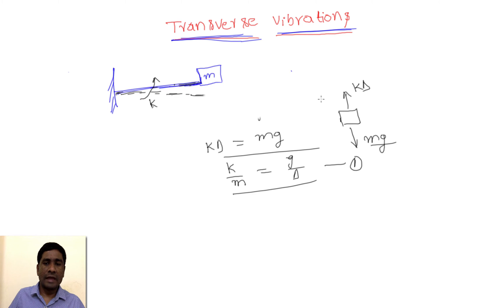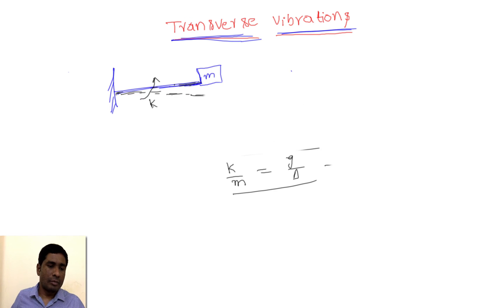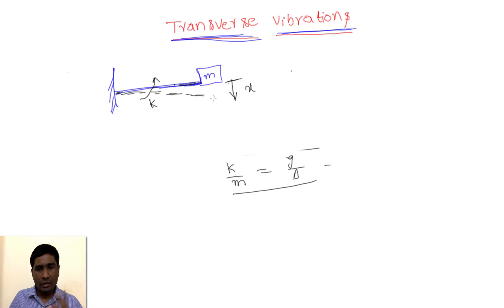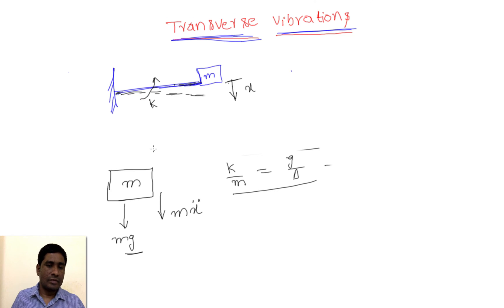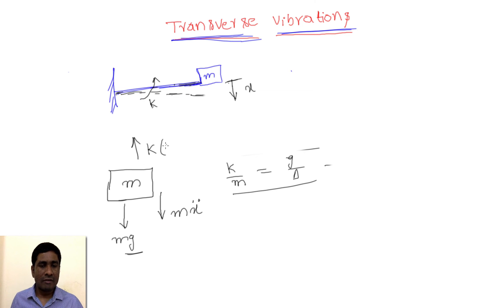Now I give an initial perturbation x in the downward direction, so the mass is vibrating with an acceleration. In the new position, the mass has an inertia force m·ẍ due to the acceleration. There is also the gravitational force mg. The spring, which opposes the motion, already has the initial displacement δ at equilibrium, and now we give additional displacement x, so the total stiffness force is k·(δ + x) acting in the upward direction.